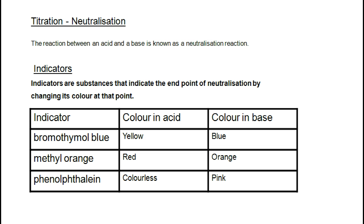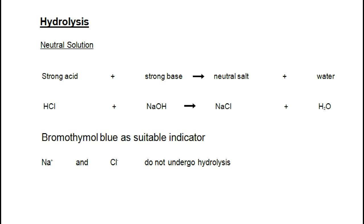Characteristic colors are shown in this table: bromothymol blue is yellow in an acid and blue in a base; methyl orange is red in an acid and orange in a base; and phenolphthalein is colorless in an acid and pink in a base. Now what is important is what causes this change of color at the endpoint.